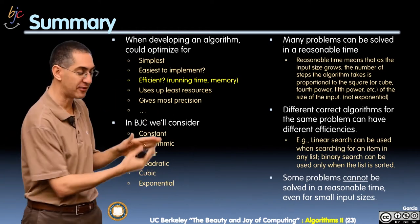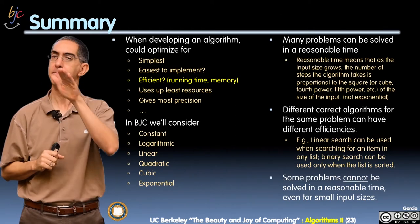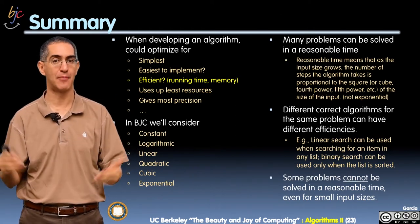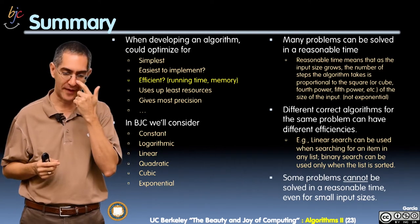In BJC, we'll consider this suite of six different classes of orders of growth. Many problems can be solved in reasonable time. Reasonable time means non-exponential, and many problems can be solved in that.